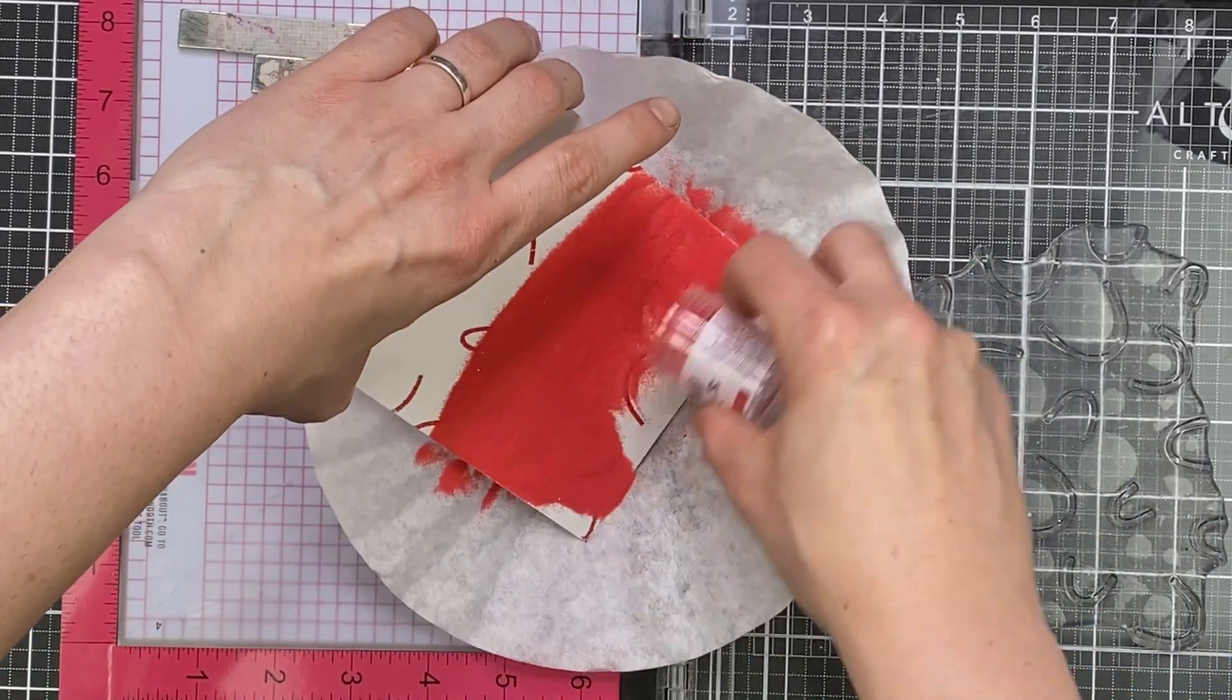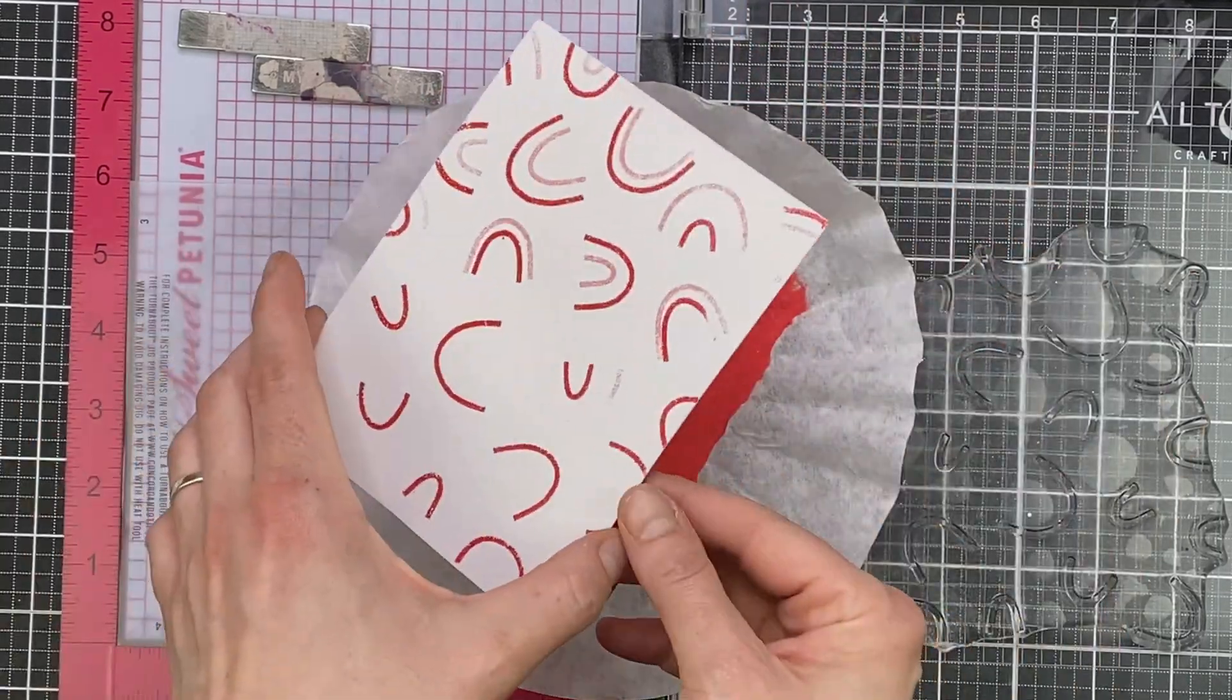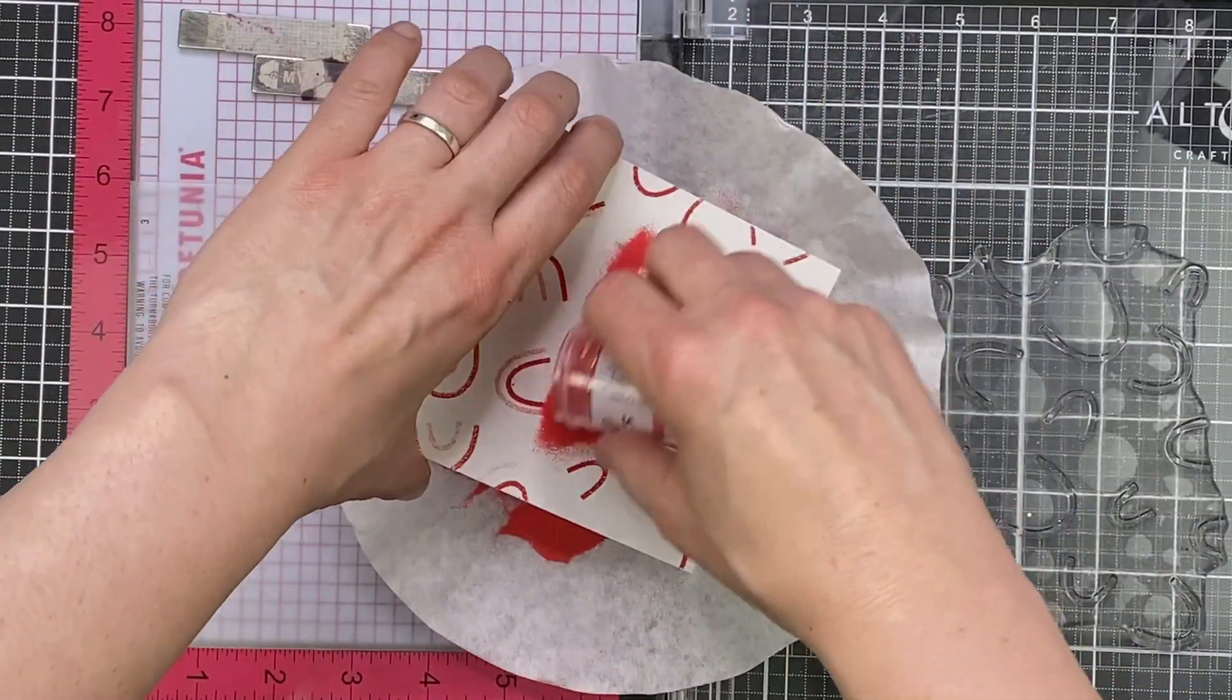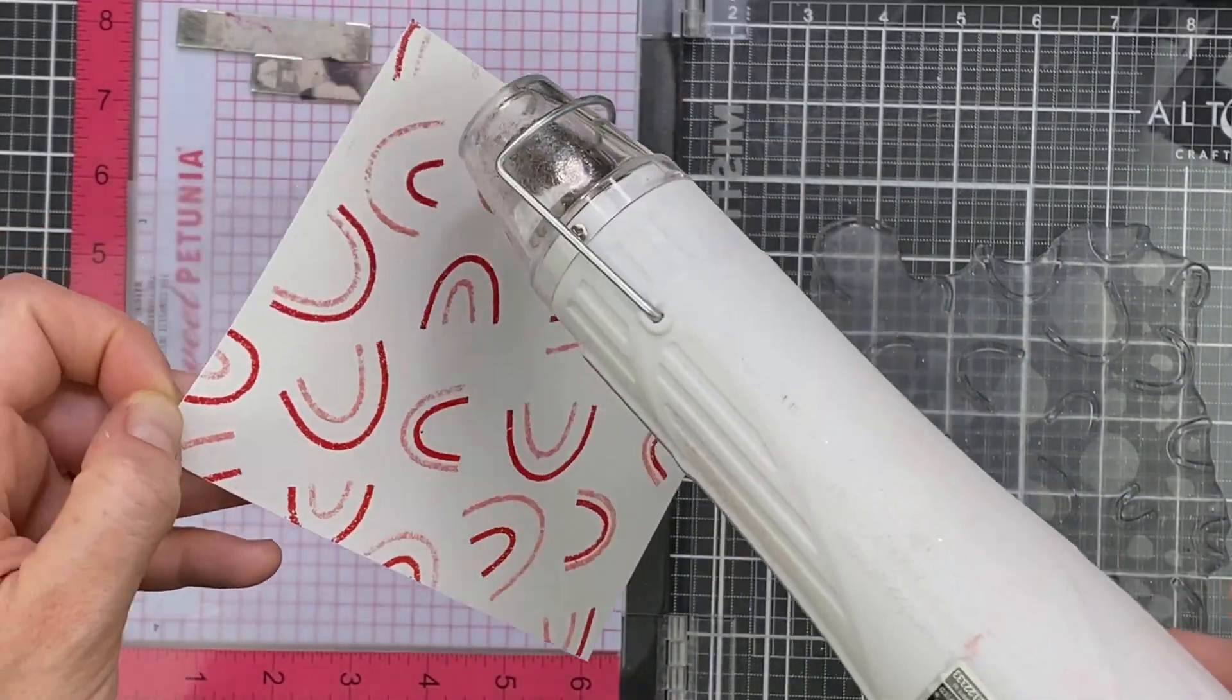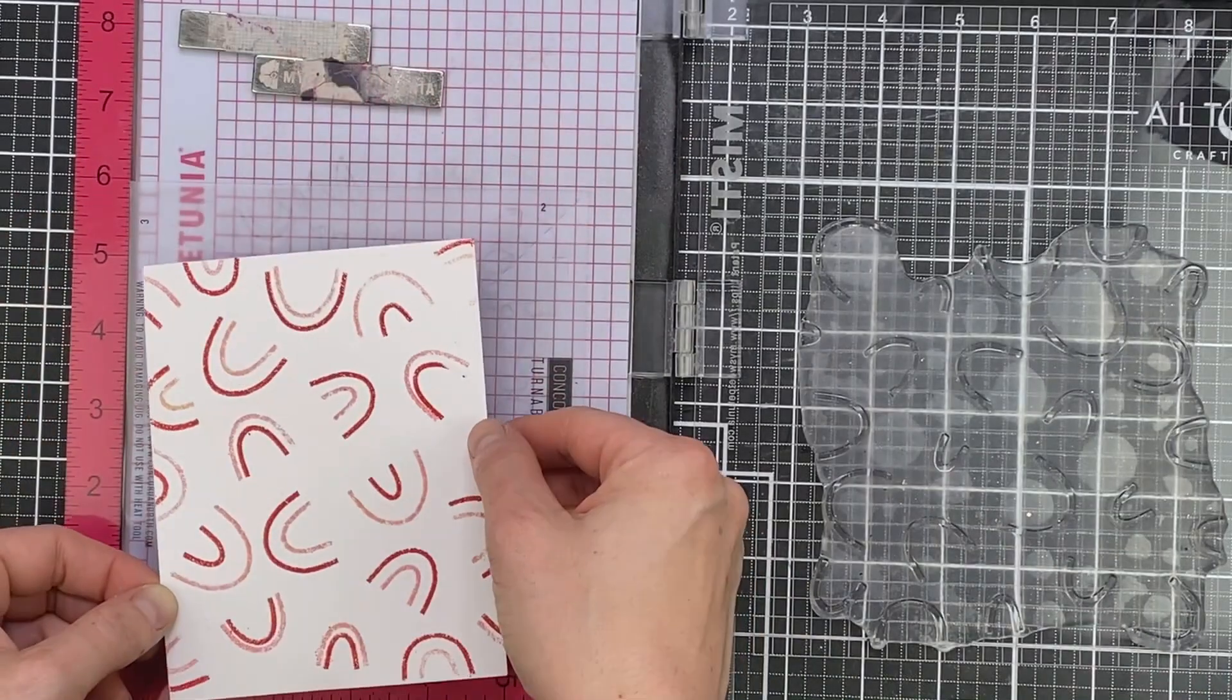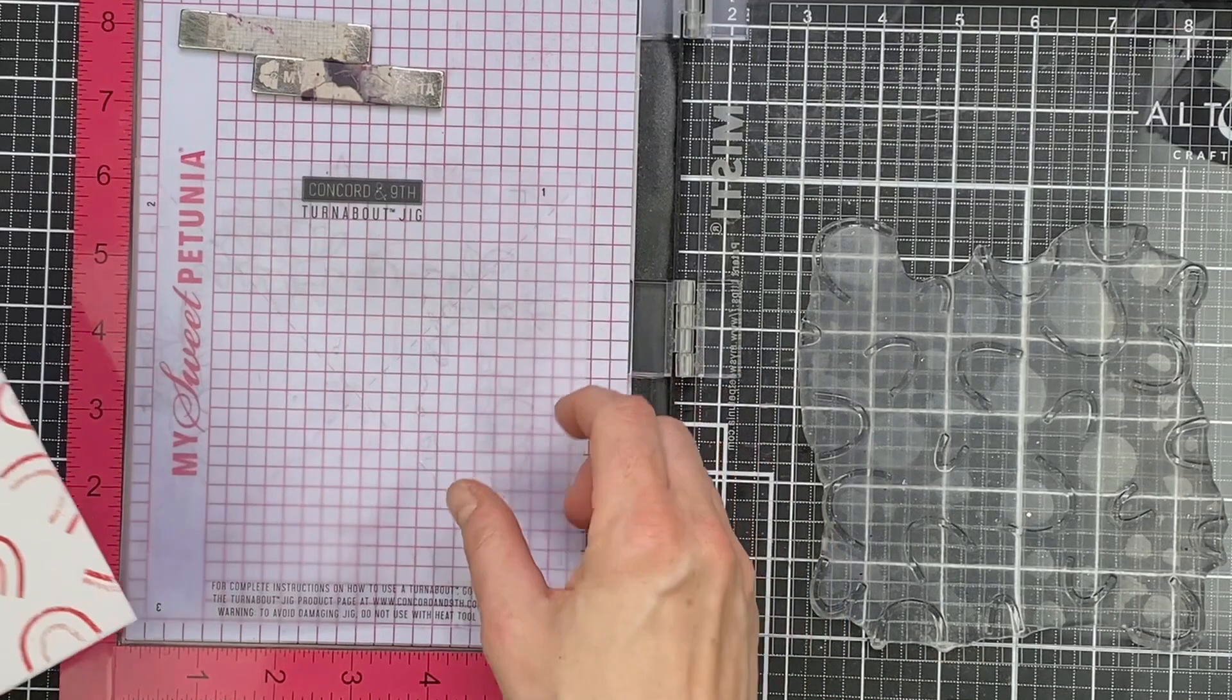Which corner lines up with the number one. So at the start when you do this, I recommend adding a little mark just in the top right corner, and it will remind you which corner lines up with the number one. I'm then going to come in and heat emboss with, this is Copacabana. I think it's discontinued now. There is another color. I think it's melon that's very similar.